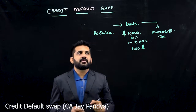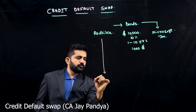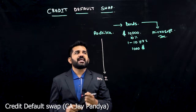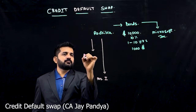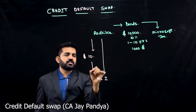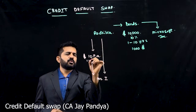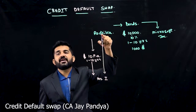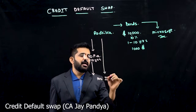So for covering this risk, Radhika goes to Mr. I. What is agreed is that Radhika will be paying $10 per annum — this is negotiated, but just for the sake of example — $10 per annum for the period of 10 years. And she was having credit default risk. That risk will be borne by Mr. I.